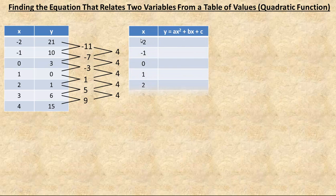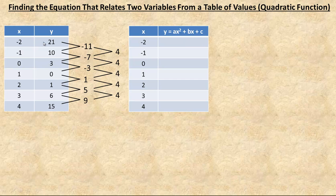Next, I would create what I call the generic table for a quadratic function. I'm going to call my quadratic function y equals ax squared plus bx plus c. Our goal is just to find what a, b, and c are. Once we know those, we know the equation that relates x and y in this table. To find all the generic y values, I would substitute using the same x values in this table as in the original one, so things match up better between the two tables.